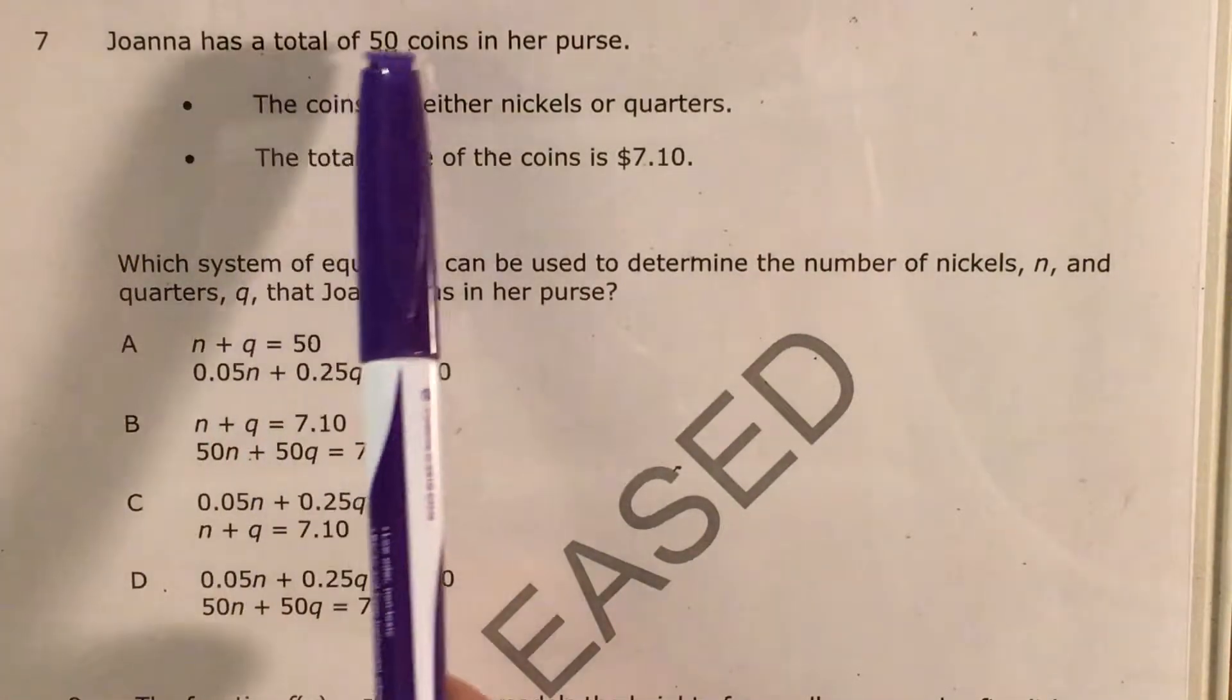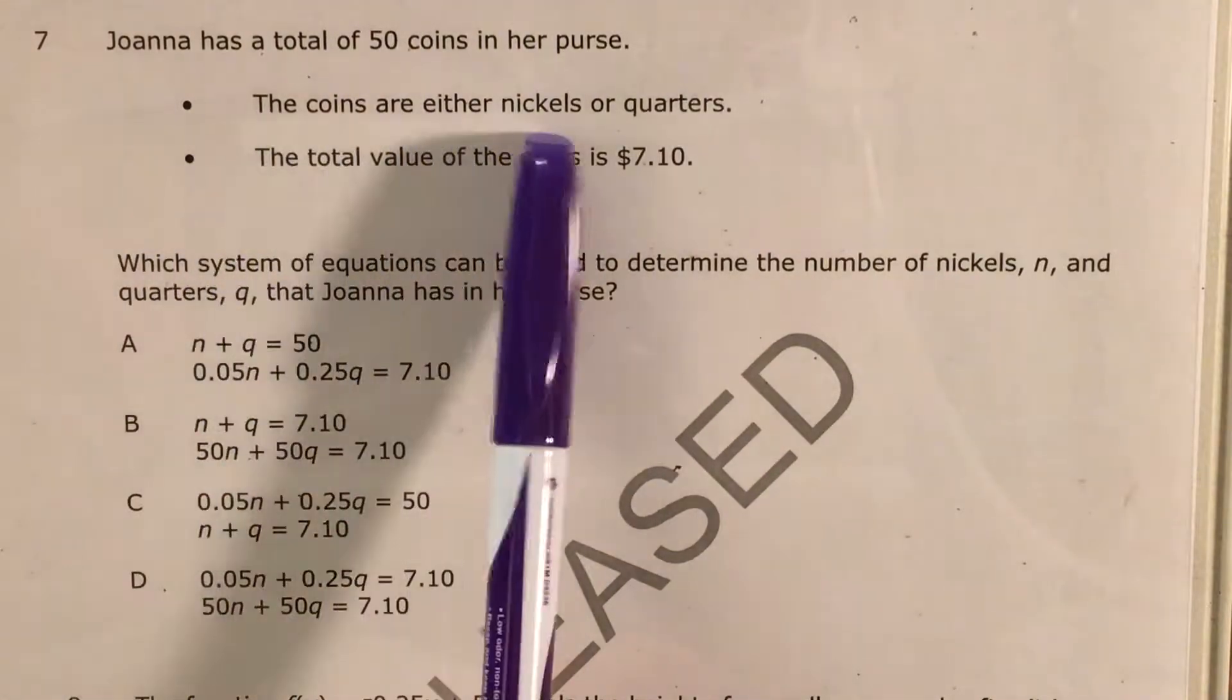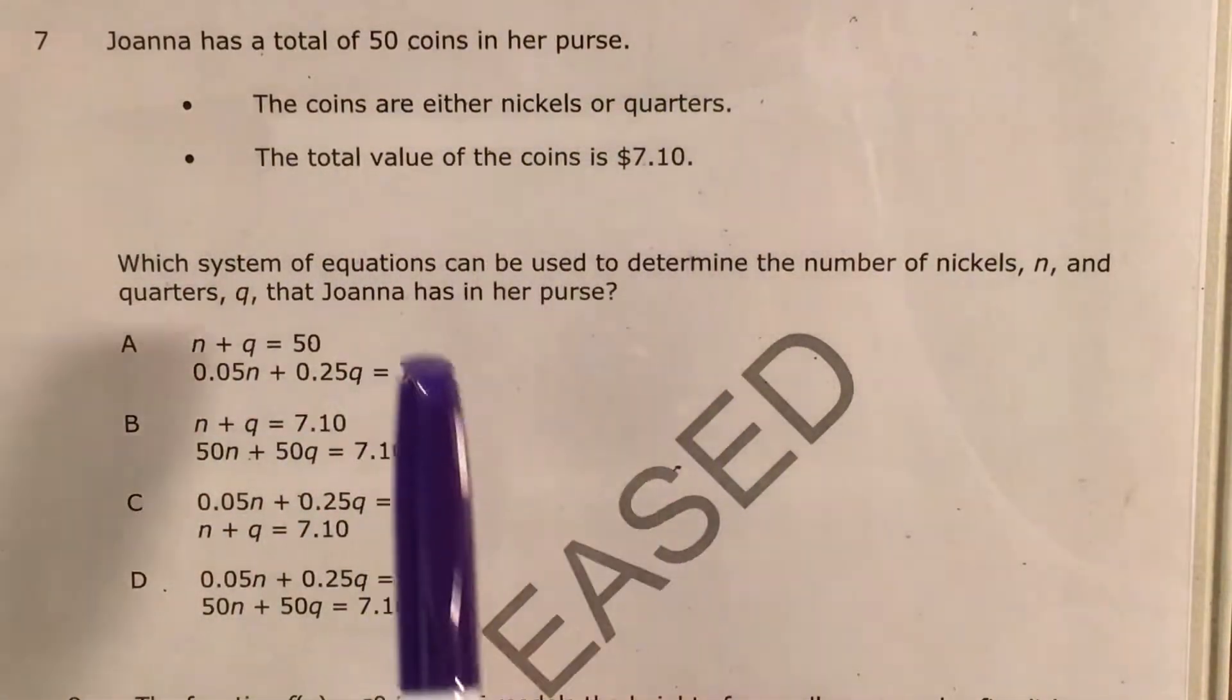The question tells us that Joanna has a total of 50 coins in her purse, nickels and quarters, and the total value of the coins is $7.10.